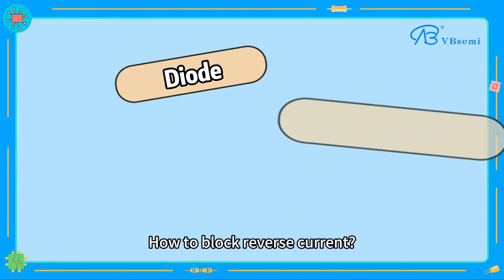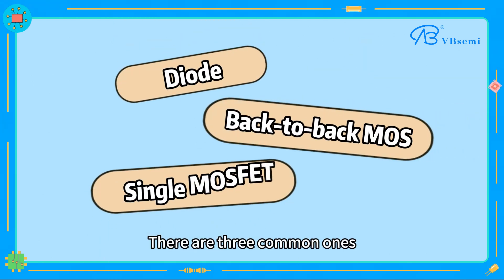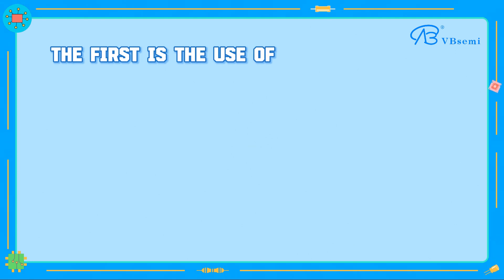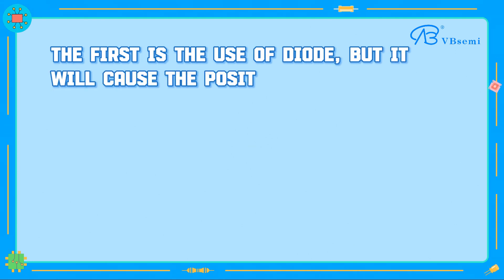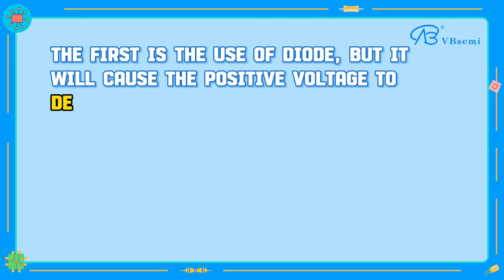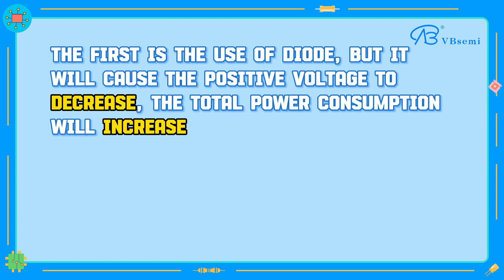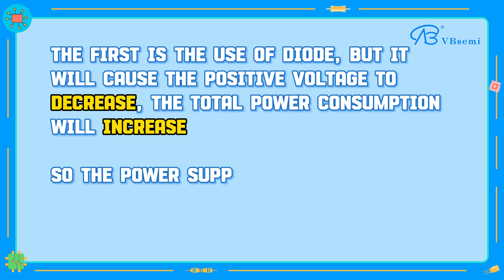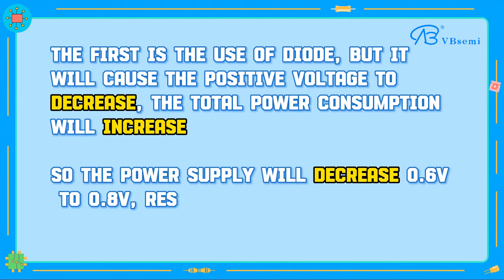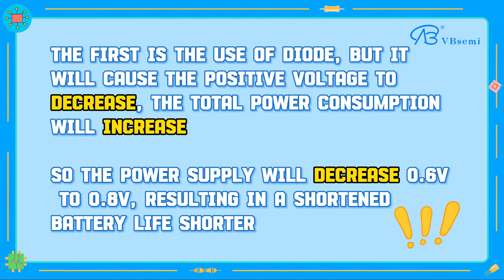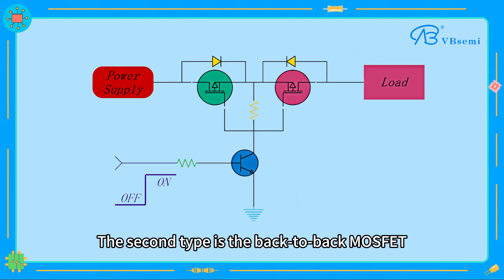How do you block reverse current? There are three common methods. The first is the use of a diode, but it causes a positive voltage drop. Total power consumption increases, and the power supply decreases by 0.6V to 0.8V, resulting in shortened battery life.